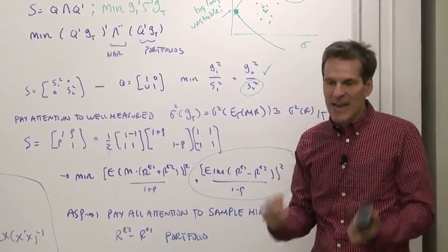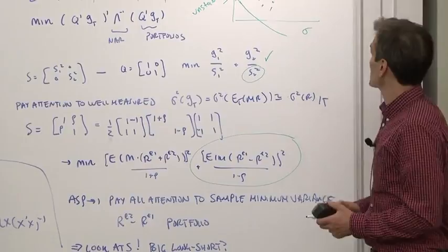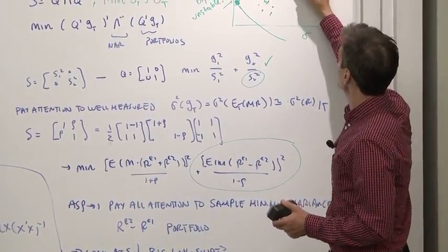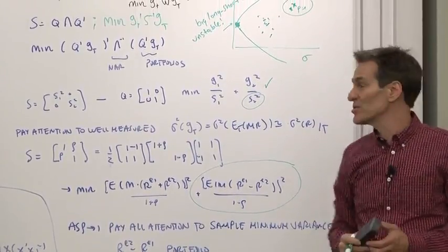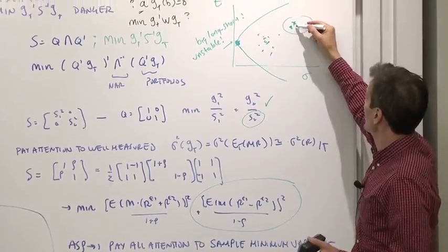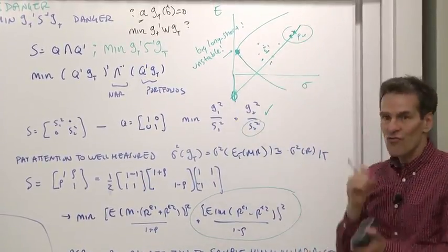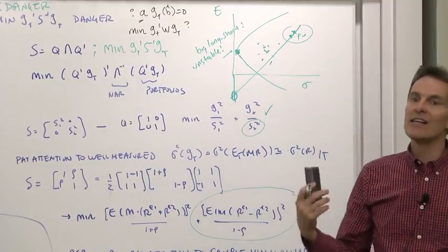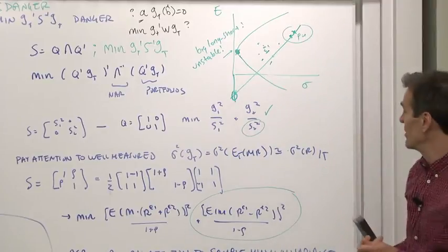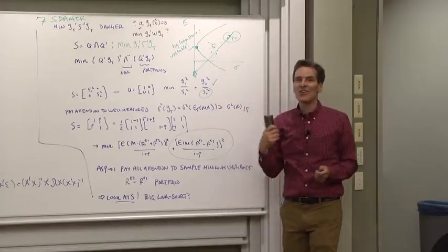Maybe it's not wise to use highly leveraged long-short positions as the basis for your estimation and testing. What often happens in practice: you might find two securities like an on-the-run and an off-the-run treasury, very highly correlated, and then the minimum variance portfolio takes an incredibly strong long-short position. Do you really want to base everything you have on that?